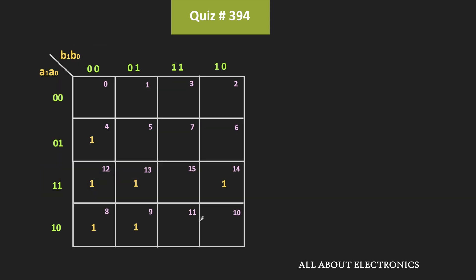As you can see, we can make a group of these four ones — that is minterms 12, 13, 8, and 9. Similarly, we can also make a group of minterms 4 and 12. And likewise, we can also make a group of minterms 12 and 14. In this way, by making three groups, we can cover all the ones in the K-map.